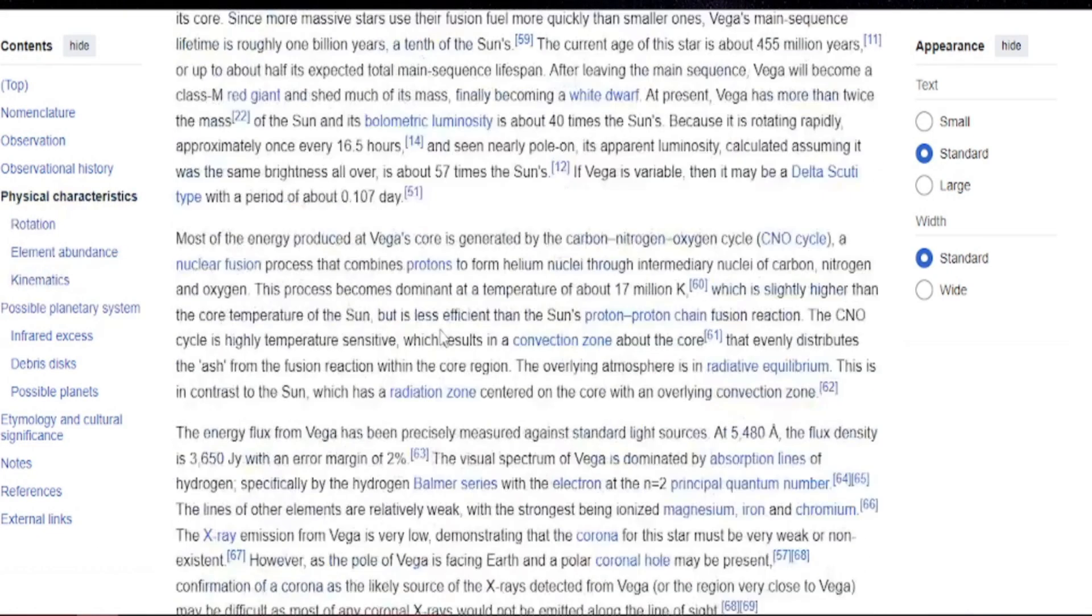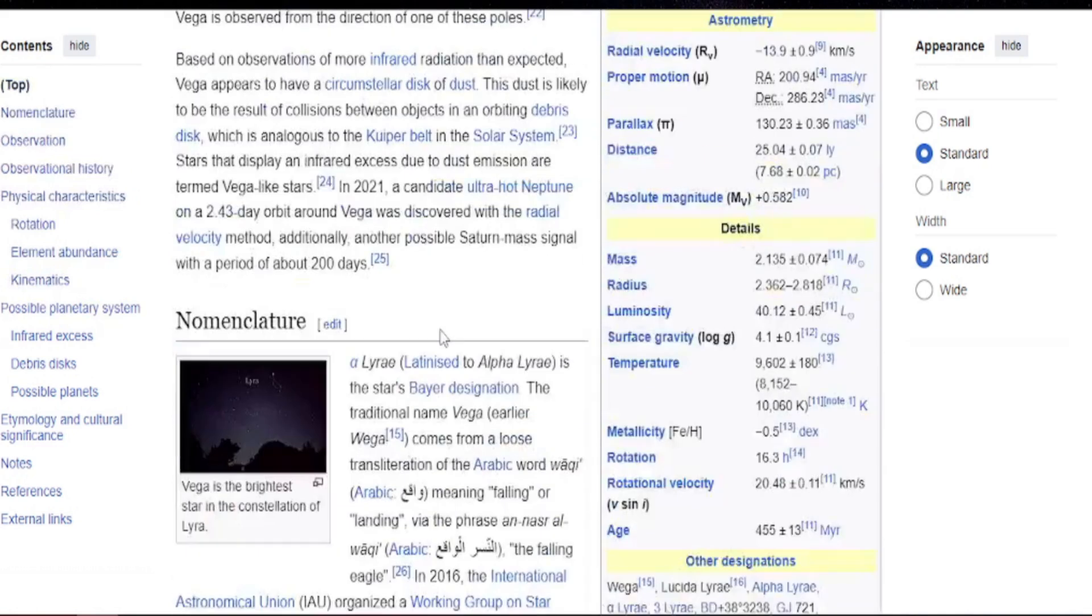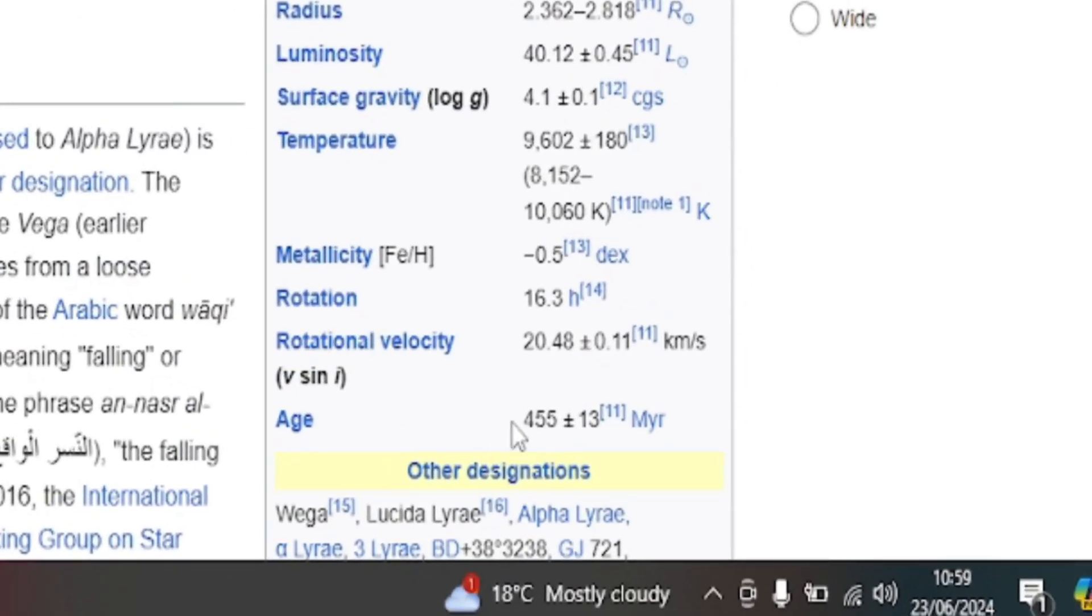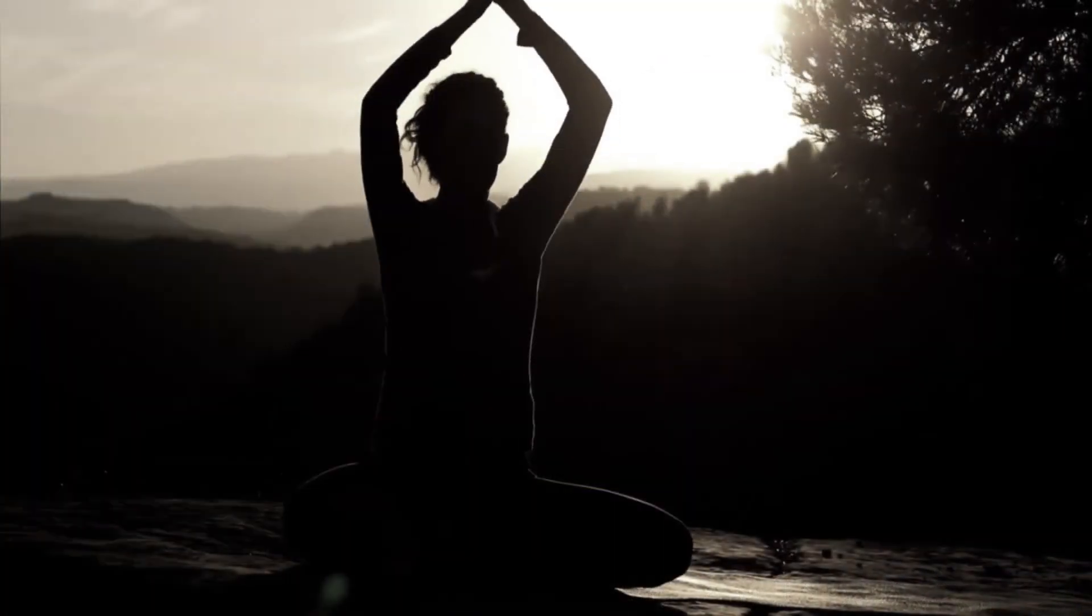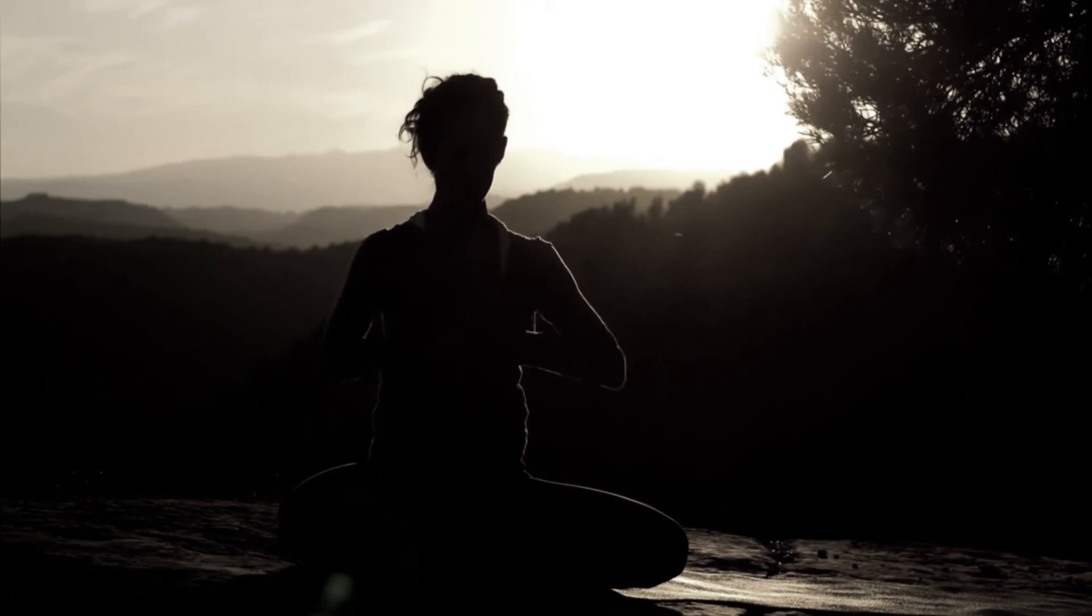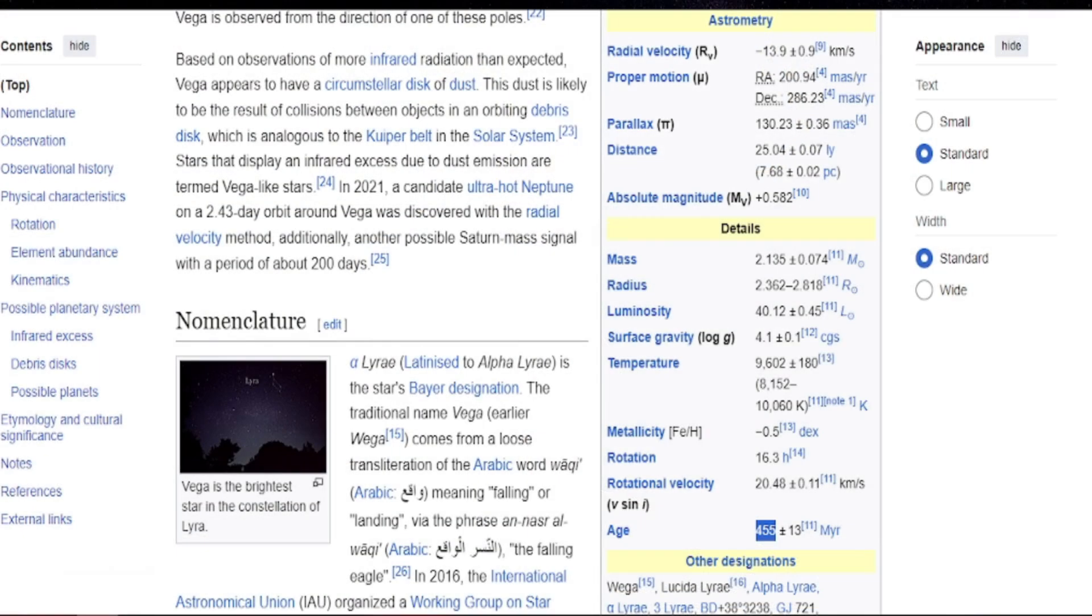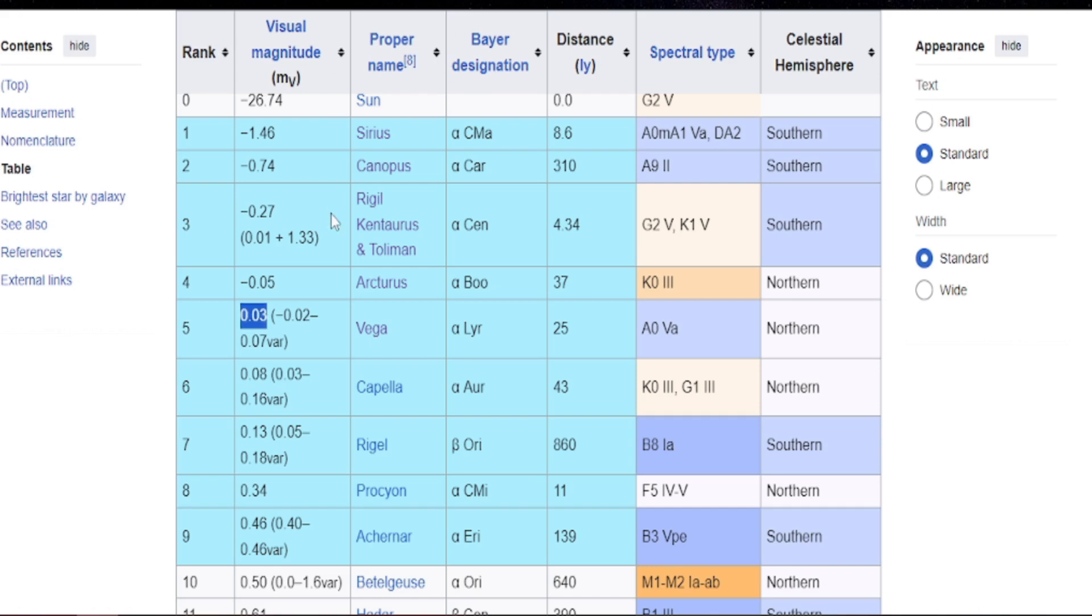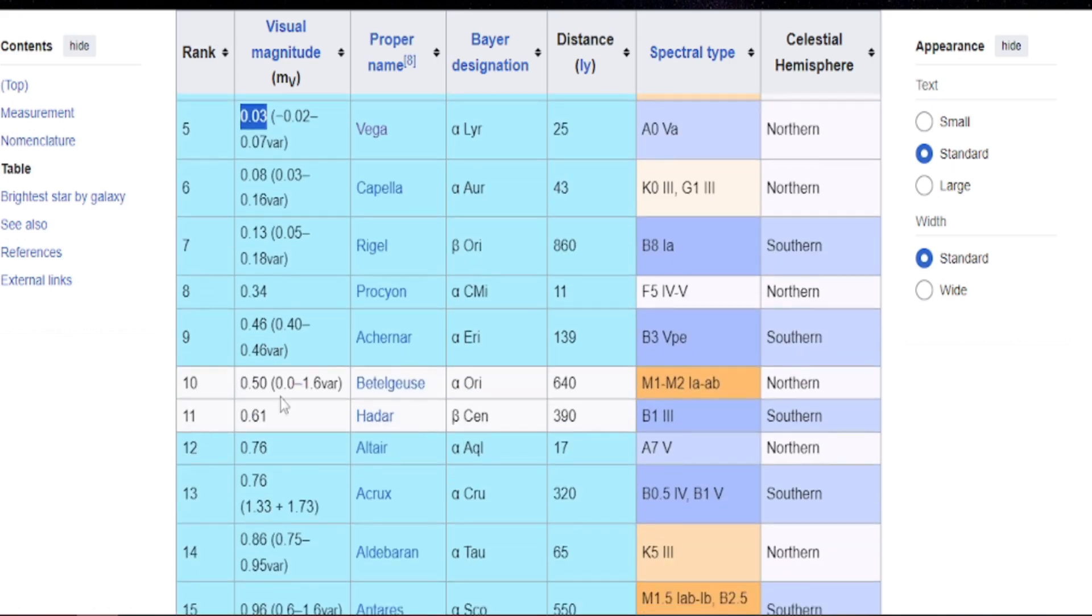Vega is obviously being a lot more powerful than the sun is actually quite a lot younger as well. As you can see, look there, 455 million years old, compared to four and a half billion for our sun. So it's comparatively very young and another interesting star there. Let's move on and perhaps we'll do a few more.